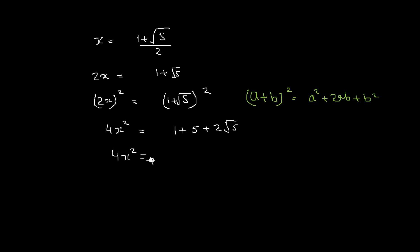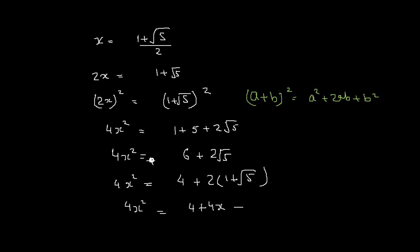So we get 4x² equals 6 plus 2√5, which can be written as 4 plus 2 times (1 plus √5). Since (1 plus √5) equals 2x, this becomes 4x² equals 4 plus 4x. Dividing by 4, we arrive at the key identity: x² equals 1 plus x.